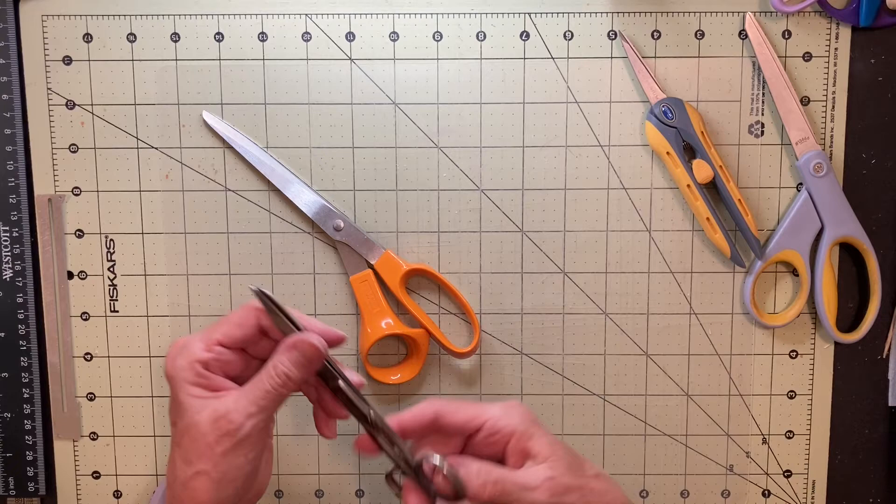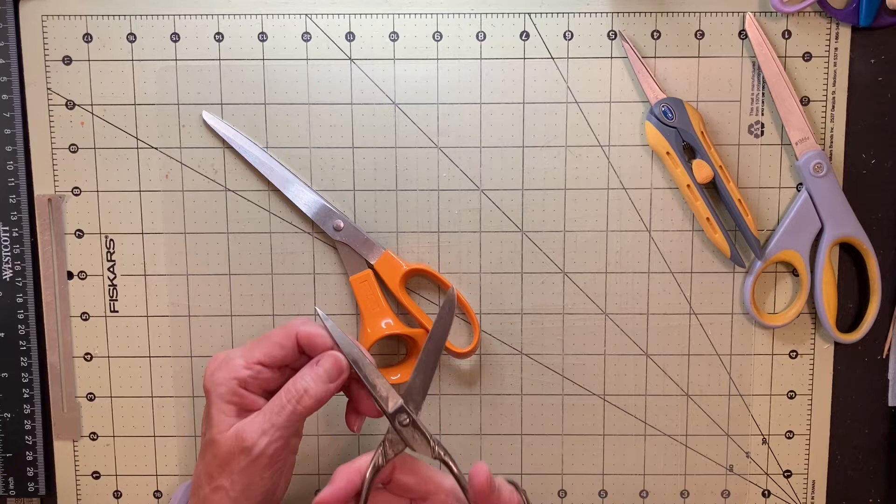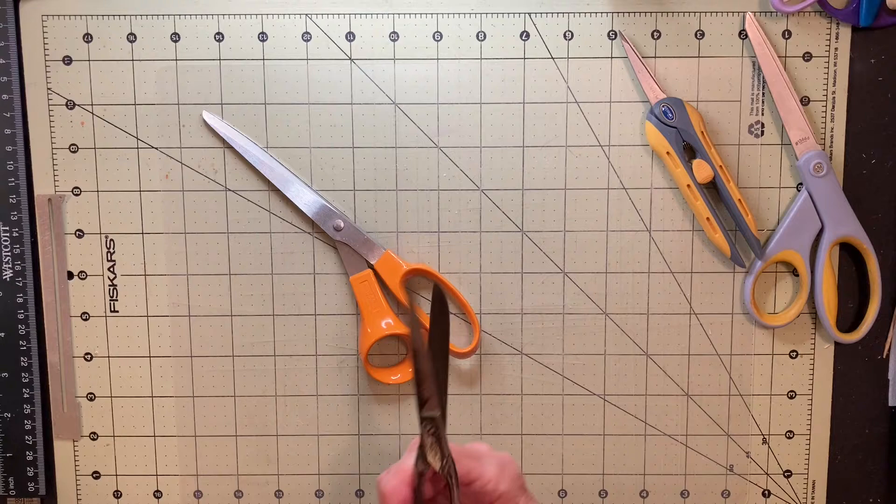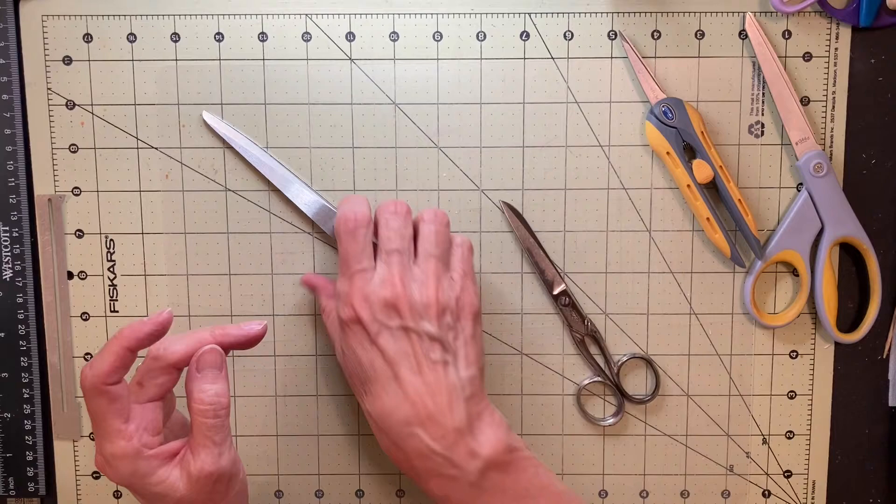This little pair of scissors have been in the family as long as I can remember. They were my mother's and they're still pretty good little paper scissors. They got glue on right now, but I keep these handy too just to have an extra pair of scissors around. So that is scissors.